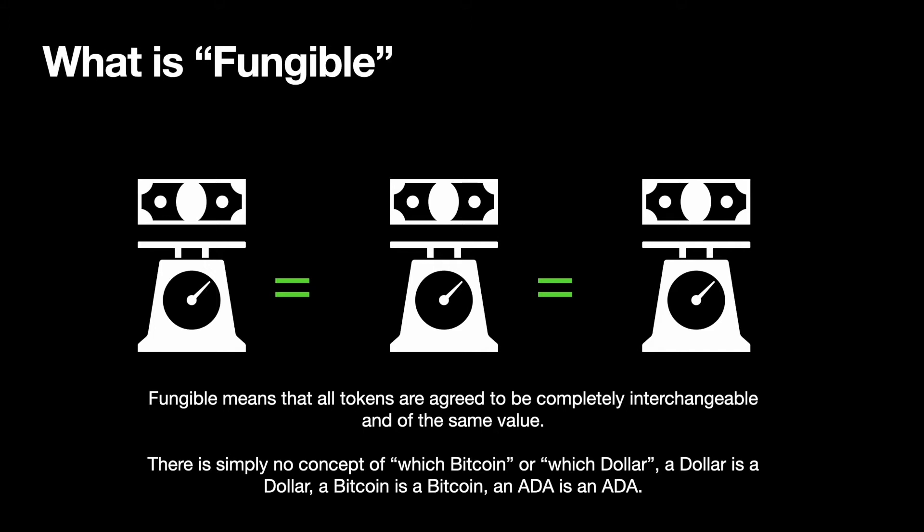You might be thinking, well, non-fungible — what even is fungible? In a sense, you know how that dollar you've got is worth the same as any other dollar? You might even say it's specifically considered identical to any other dollar. There's no real concept of which bitcoin or which dollar you have. A dollar is a dollar, a bitcoin is a bitcoin, an ADA is an ADA. That's fungible — interchangeable, considered the same value and essentially the same.